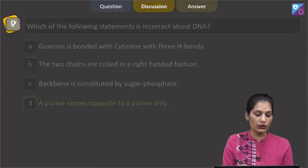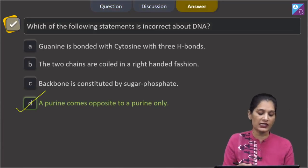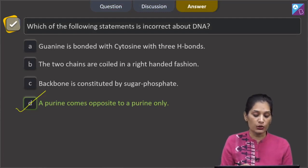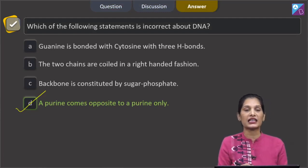So the correct option for the given question is option D which says a purine comes opposite to a purine only as this is the incorrect statement.